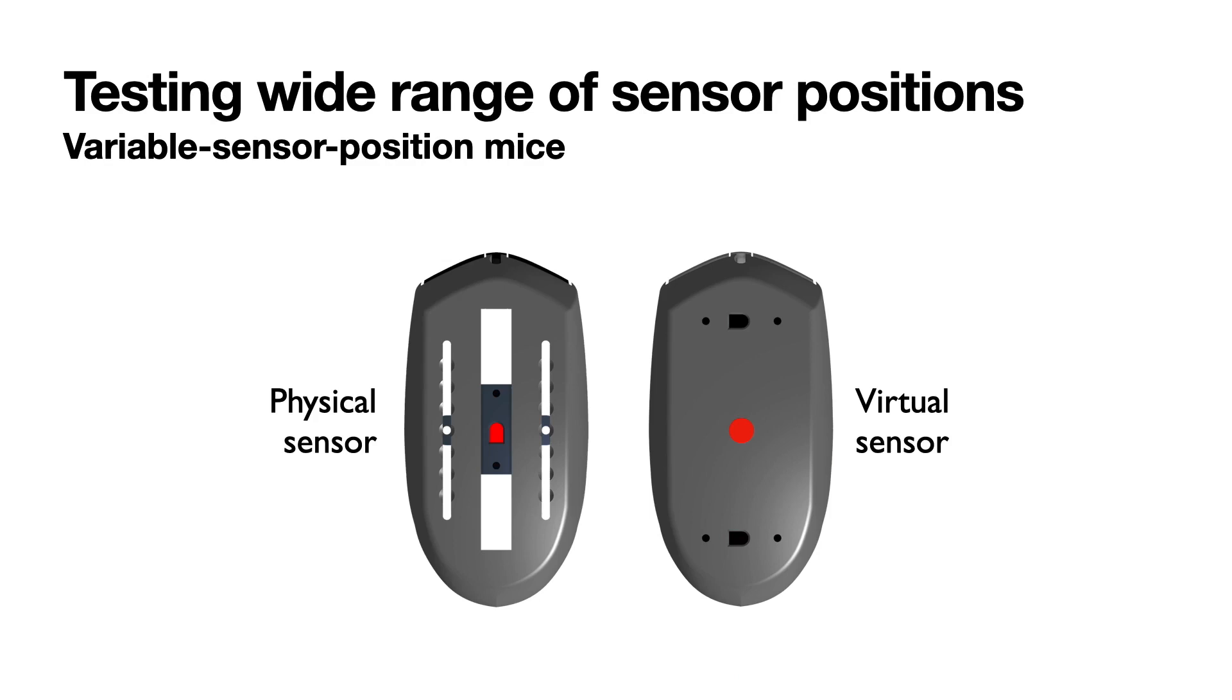To test the different sensor positions as wide as possible, we fabricated two different variable sensor position mice. The first one mounted a sensor on a moving rail, and there were seven possible mounting positions. The second one equips two sensors and it synthesized a virtual sensor between them.